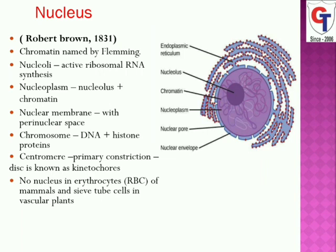A well-defined nucleus is only present in eukaryotic plant and animal cells. Robert Brown in 1831 first discovered the nucleus structure. The nucleus contains genetic material.